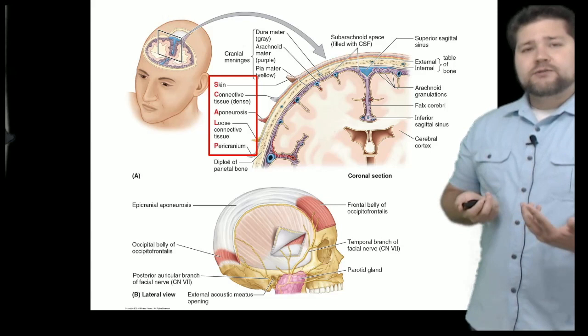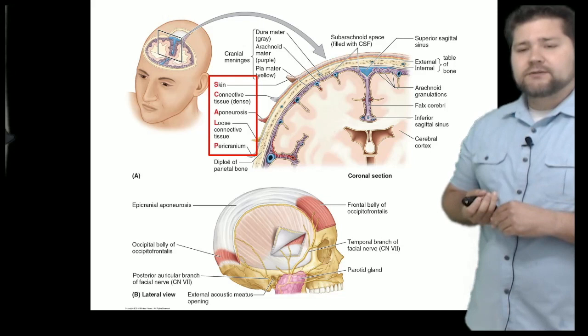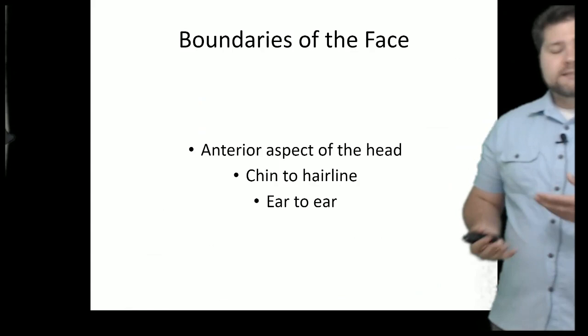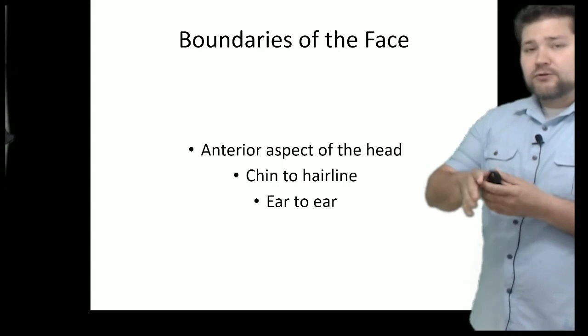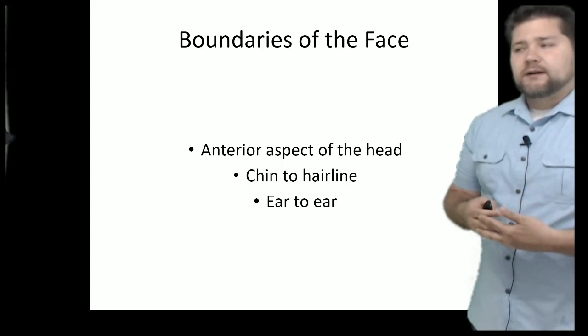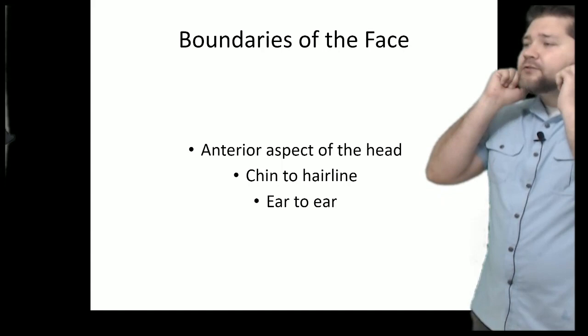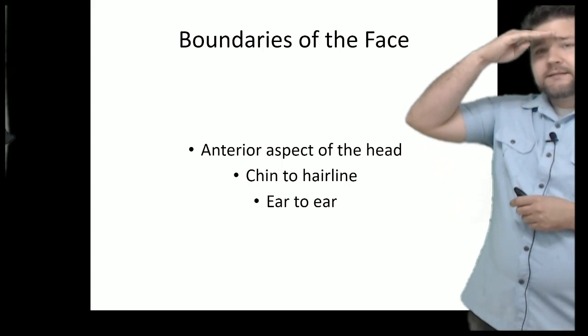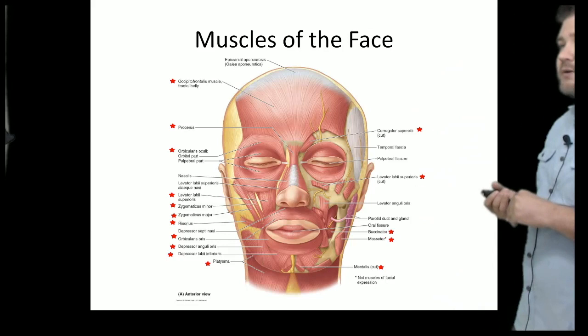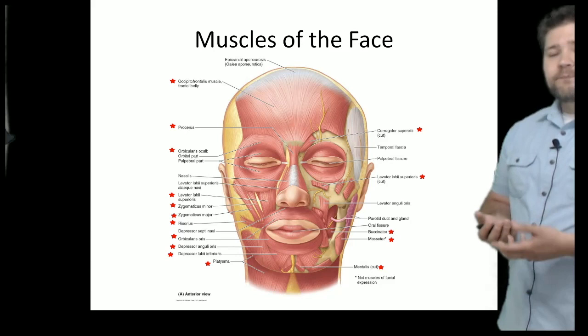We will talk about how the scalp gets sensory innervation, but other than the occipitofrontalis muscle, there's really not a lot of musculature going on in the scalp region. The face is really just everything else. We talked about the neurocranium, and the face corresponds to the viscerocranium. The boundaries of the face go ear to ear anteriorly, and from chin to hairline.